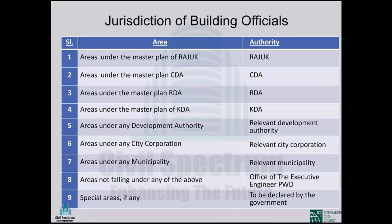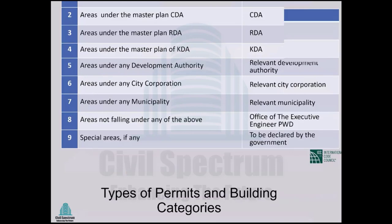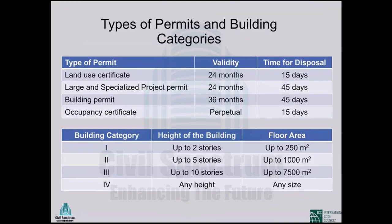There is also a floor area criterion — if a single-story structure exceeds 250 square meters, it is classified as Category 2 instead of Category 1. Why is this categorization needed? Because we are assigning required qualifications for professionals who can design, inspect, supervise, or be involved in construction of a building of a specific category. For structural design, Category 1 buildings (up to two stories) require a civil engineering degree but no specific years of experience. Category 2 requires at least two years of experience. Category 3 requires four years, and Category 4 requires at least eight years.